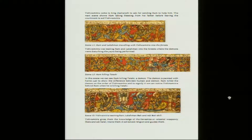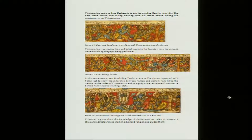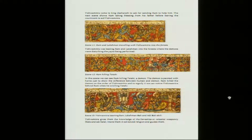Ram killed the demon on the order of Vishwamitra — we can notice Vishwamitra behind Ram when he is killing Tataki; Vishwamitra goes back and gives instruction to Ram so that Ram can kill Tataki. In the next scene, Vishwamitra gives the boys knowledge of the Devastras — all the celestial weapons which are given by celestial characters are coming in. These people are getting trained on how to use the celestial weapons, specifically Bala and Adi Bala, which are offered to them as a blessing. Vishwamitra trains them and guides them on how to use the weapons and their restrictions.